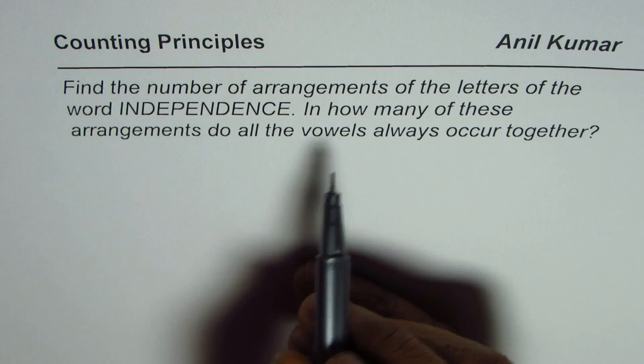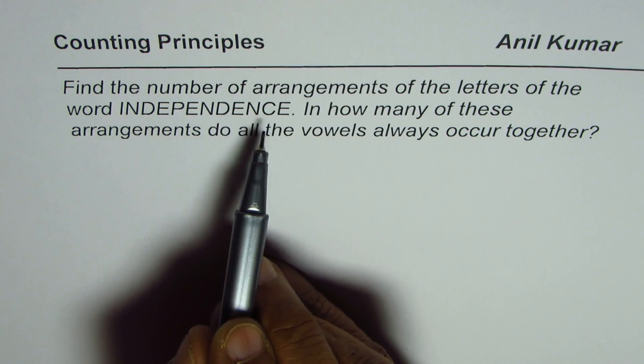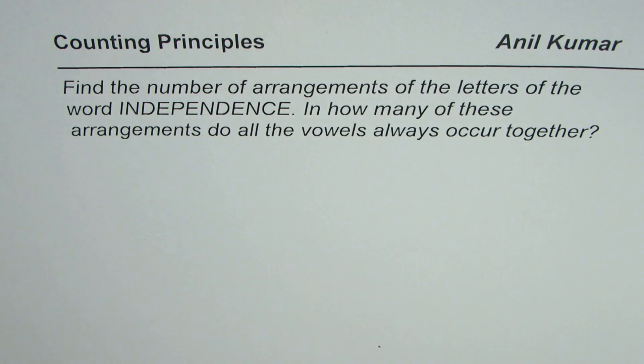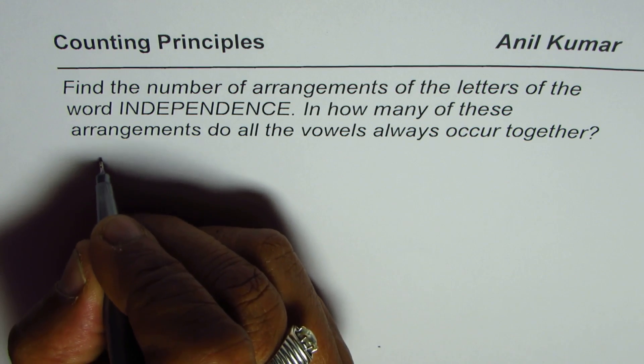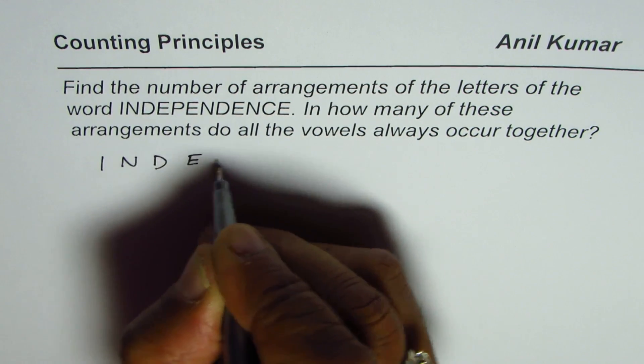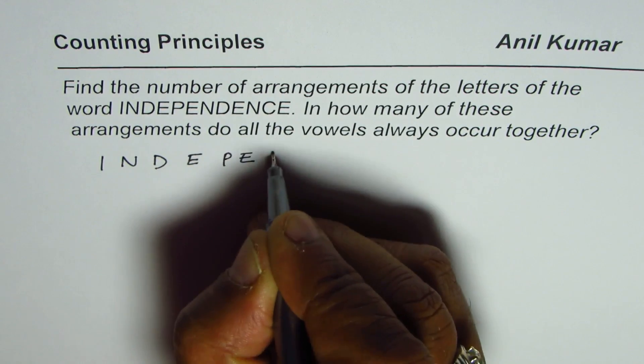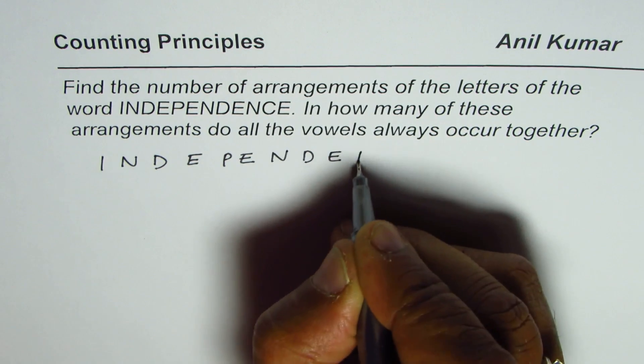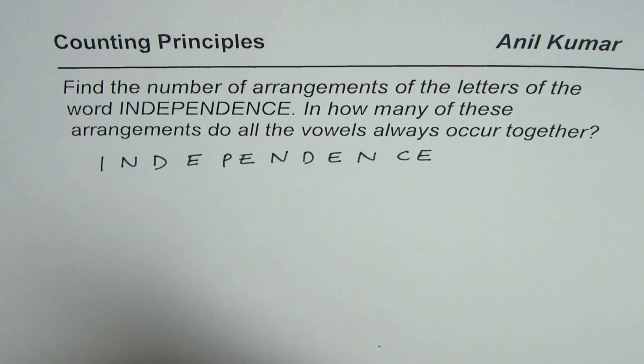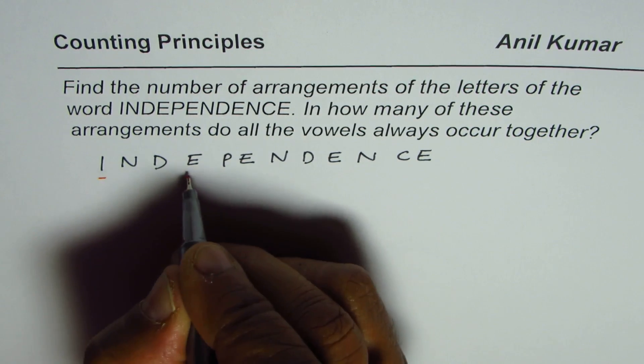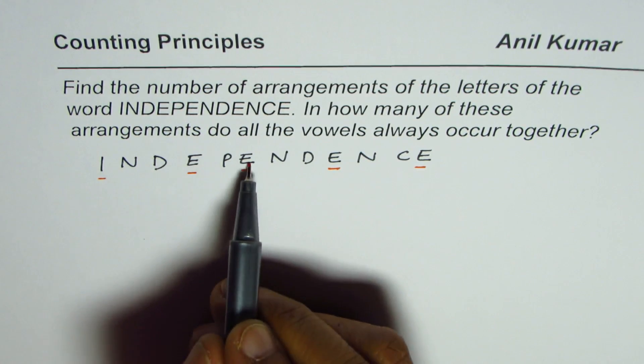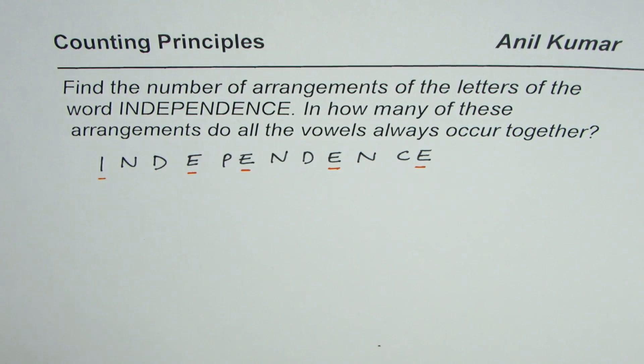Now to do such questions, let us analyze the word itself. We are interested in vowels coming together. So let me mark how many vowels are there. Let's write down the word, it is independence. So the vowels here are I, E, E, E, and E. So we have one, two, three, four E's and one I.